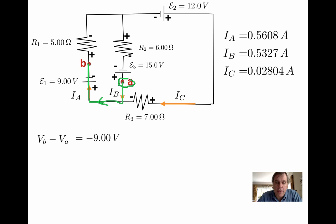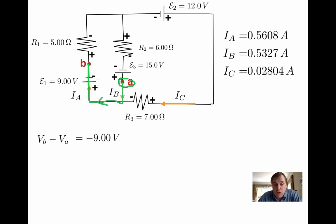Notice that to answer this question, I didn't even need the currents — I could have answered this at the very beginning, before solving for the currents. Sometimes when asked to find the difference of potential between two points, you might think you need the currents first, but sometimes you don't. What's special here is that there's a path that avoids any resistors, so we just go through a battery and don't need the currents anywhere.